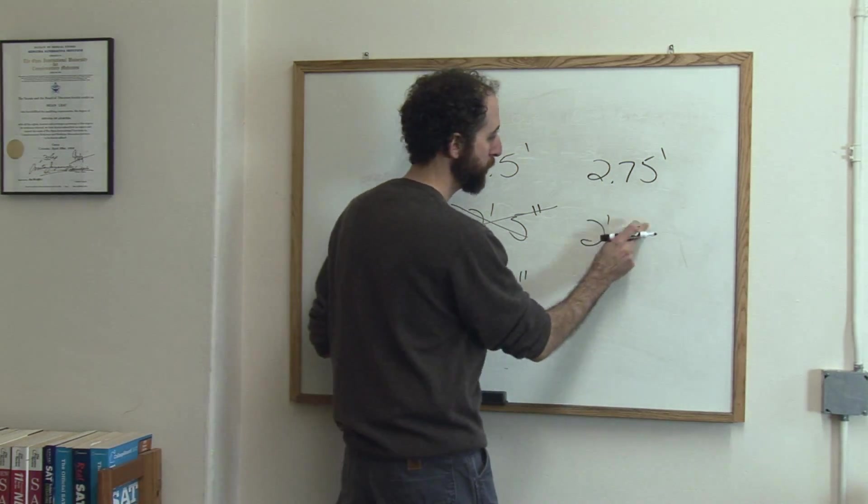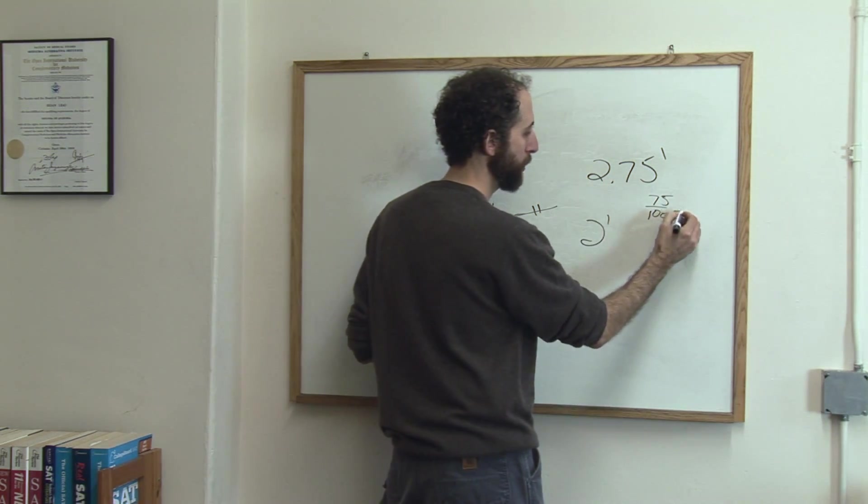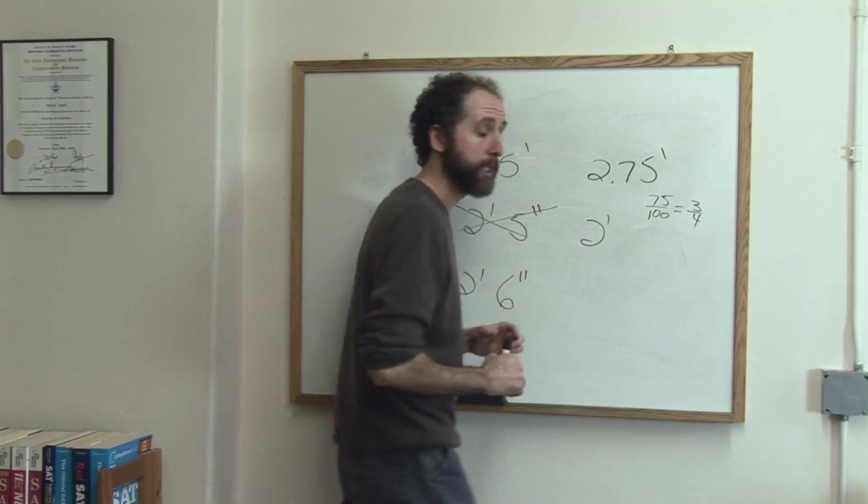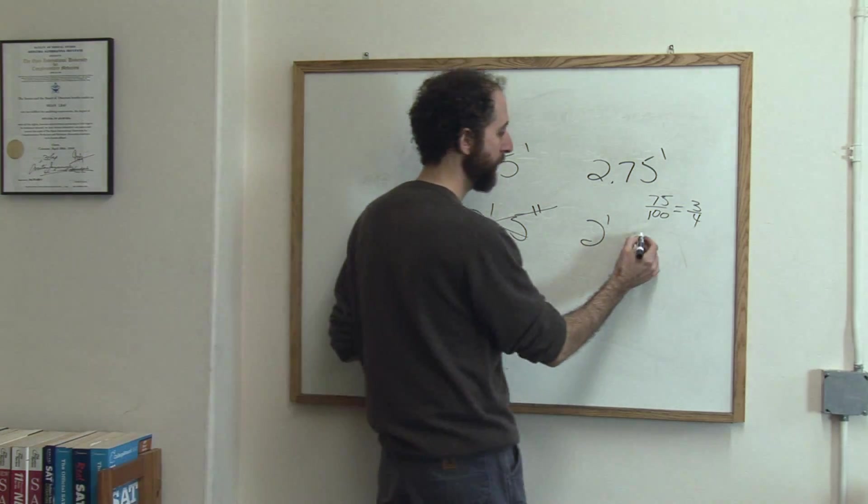So what it is, is it's going to be 2 feet and then 3 quarters, right? 75 out of 100, which is 3 fourths. It's going to be 3 fourths of another foot, and so that's going to be 9 inches.